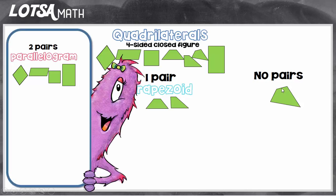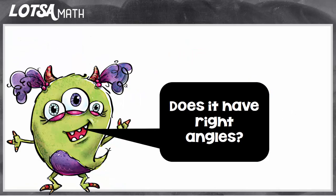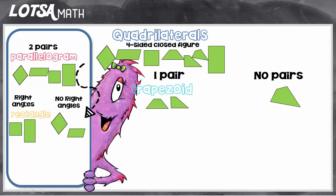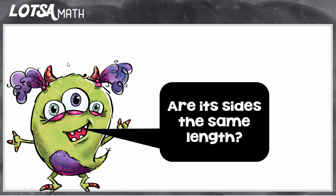Let's look at parallelograms in particular, because parallelograms can be narrowed down even more and given more specific names. The first question you'd want to ask is: does it have right angles? If it does have right angles, then you can also call it a rectangle. Parallelograms without right angles are just still called parallelograms.